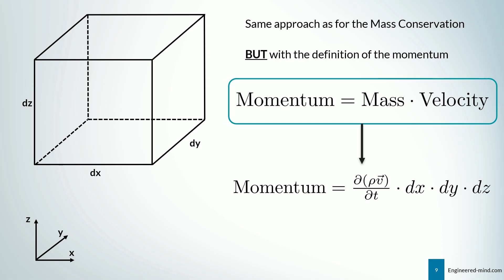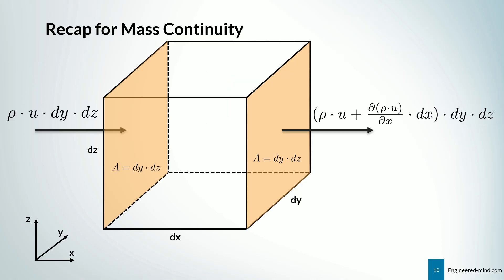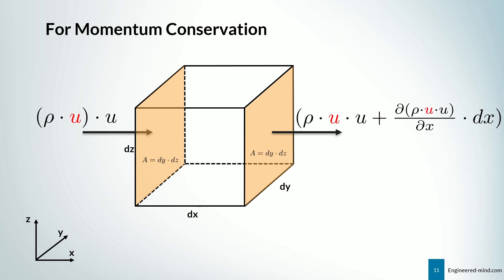So we have the same approach as for the mass conservation, but with a definition of the momentum right now. So recap for the mass continuity equation again, so that you see what approach we took. We had a look at what's coming into our control volume on the left side, and we had a look how the component in x direction changes along the x direction. So for the momentum conservation, we just add the velocity, and you end up with the following form as you can see on the slide. So we work with that in every direction right now.